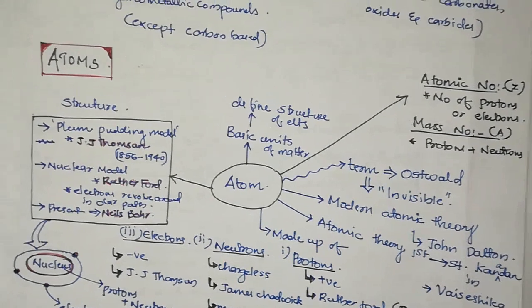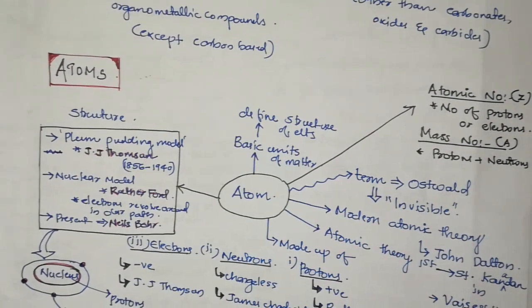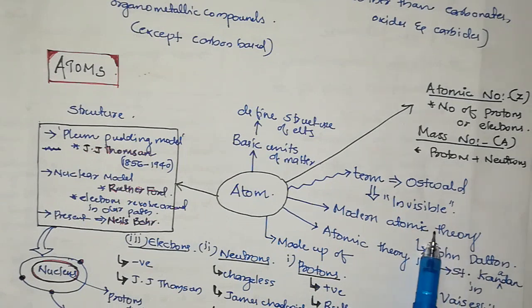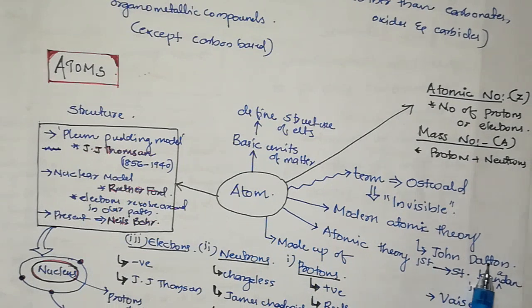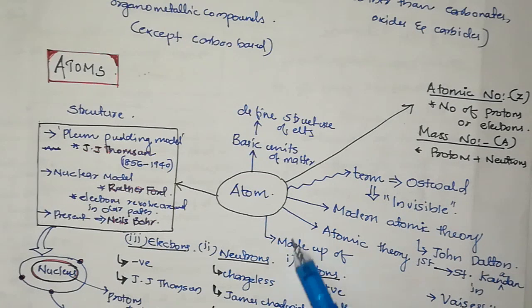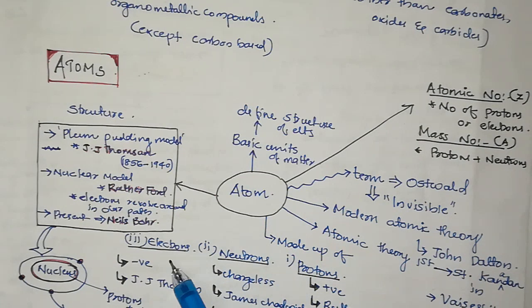The modern atomic theory was proposed by John Dalton. The atom is made up of protons, neutrons, and electrons.